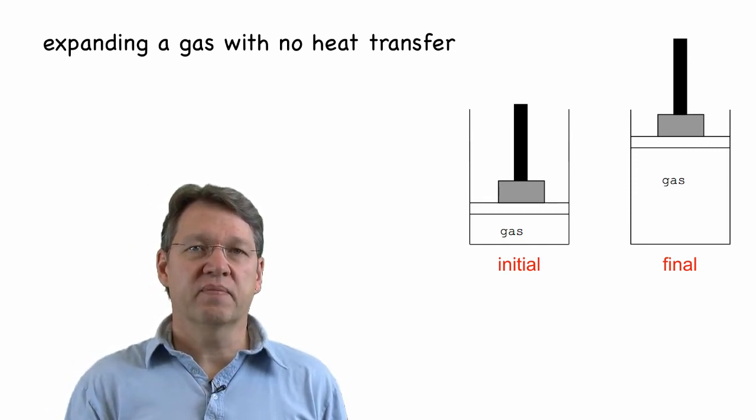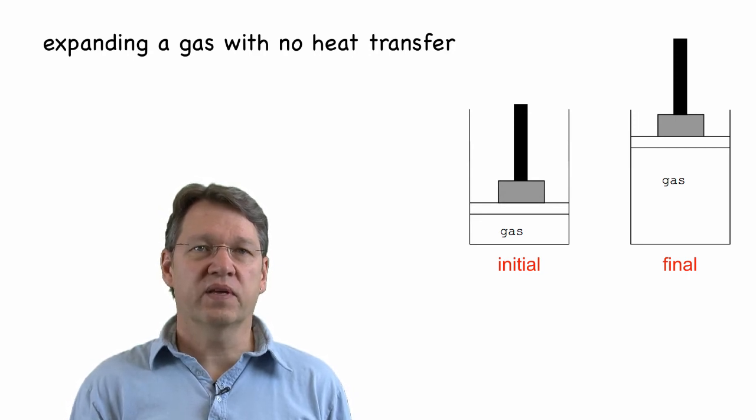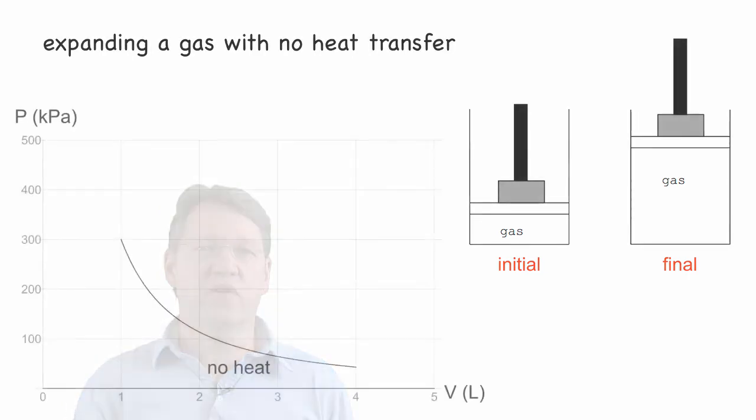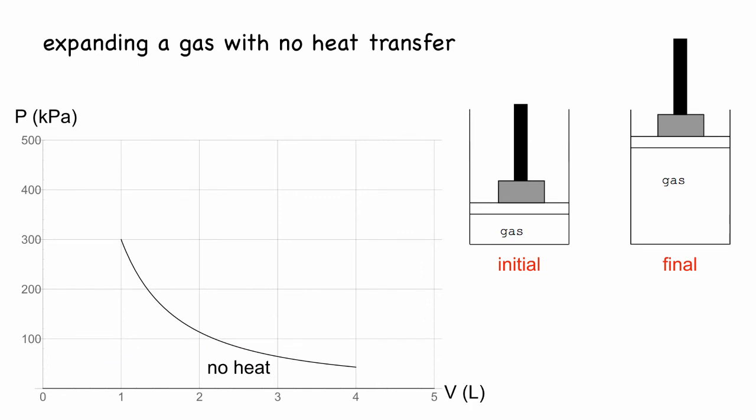If the process is happening slowly enough that at every moment the gas is near equilibrium, then we can better understand what is going on by drawing a graph of the pressure versus volume during the expansion.